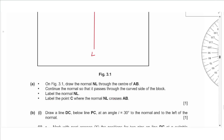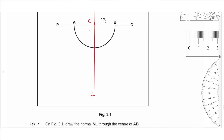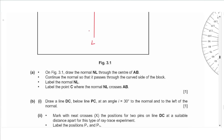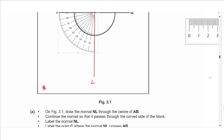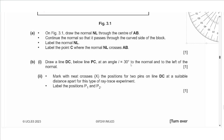Label point C where normal NL crosses AB. Part b(i): draw a line DC below line PC at an angle of incidence of 30 degrees to the normal, to the left. Place the protractor at point C, measure 30 degrees from the normal, draw the line downward from C, and label the end D. Part b(ii): mark with crosses the positions of two pins on line DC at suitable distance apart — at least 5 cm apart — and label these positions P1 and P2.